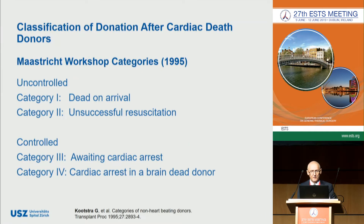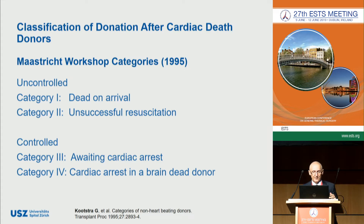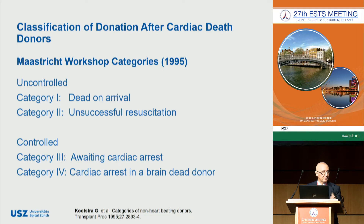Originally, four DCD categories were defined according to the Maastricht classification. The first two are uncontrolled donors, and categories three and four are the controlled donors. An uncontrolled DCD donor may occur when a person dies unexpectedly, and in these cases this person may become a potential donor if their organs can be adequately preserved. In controlled donation, we have the time to preserve and make ideal preparations to proceed with the transplantation.